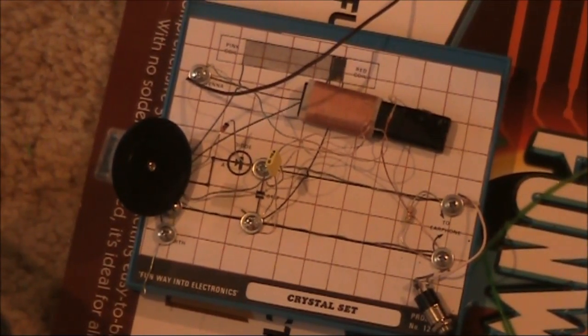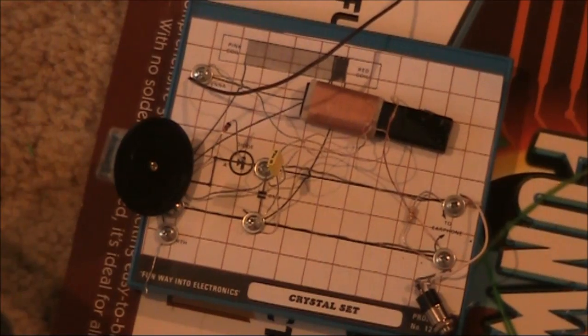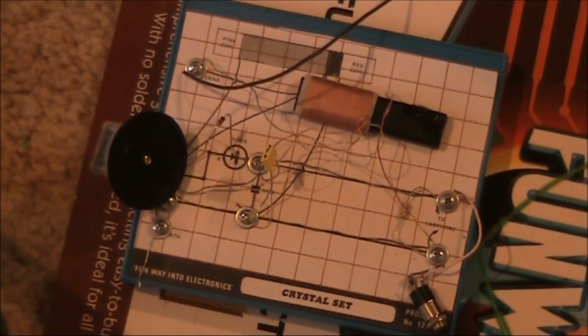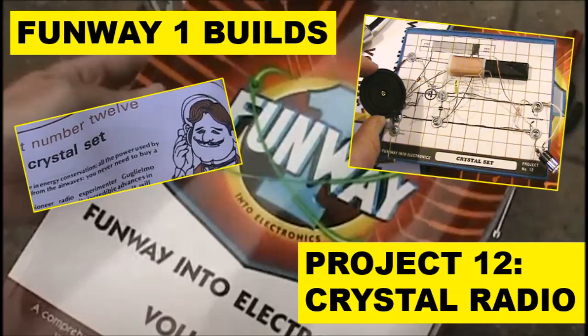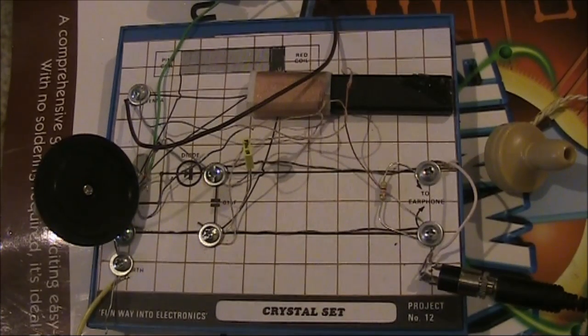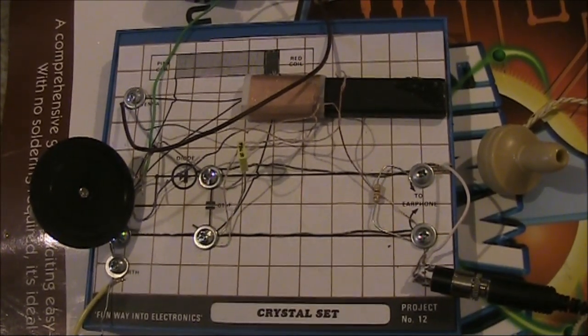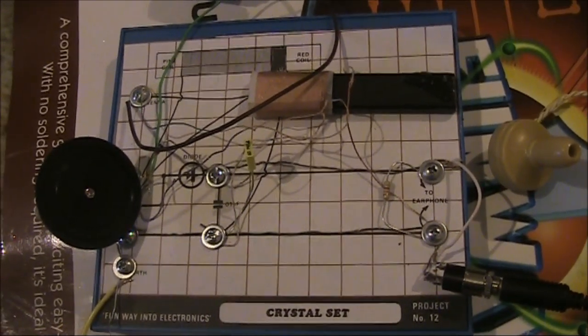The crystal set I'm using here is a Dick Smith Funray Volume 1 type that I described in detail in a previous video. Right now I've got the crystal set connected to an outside antenna and an earth. This is what it sounds like.